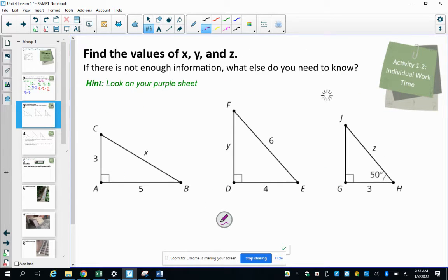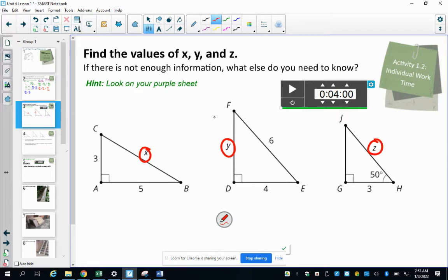All right, then on the next page, or sorry, on that same page at the bottom, determine the value of the missing side here. So find the value of X, find the value of Y, find the value of Z. And that's if you can. If there's not enough information possible, what else do you need to know? Well, one hint is to look at your purple sheet. So there's some stuff on your purple sheet that might help you. So try this. If you get stuck, pause the video, try this. If you get stuck, you can push play for another hint.